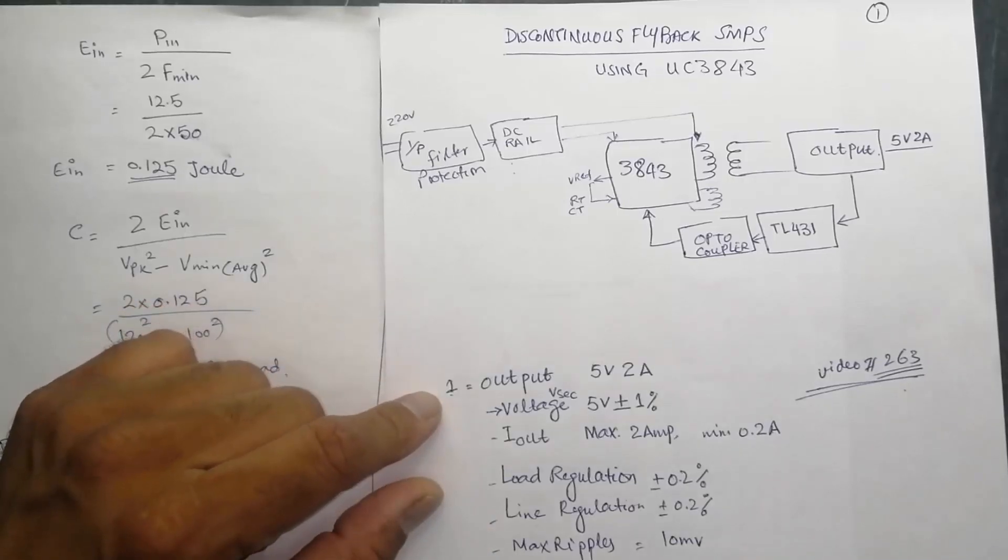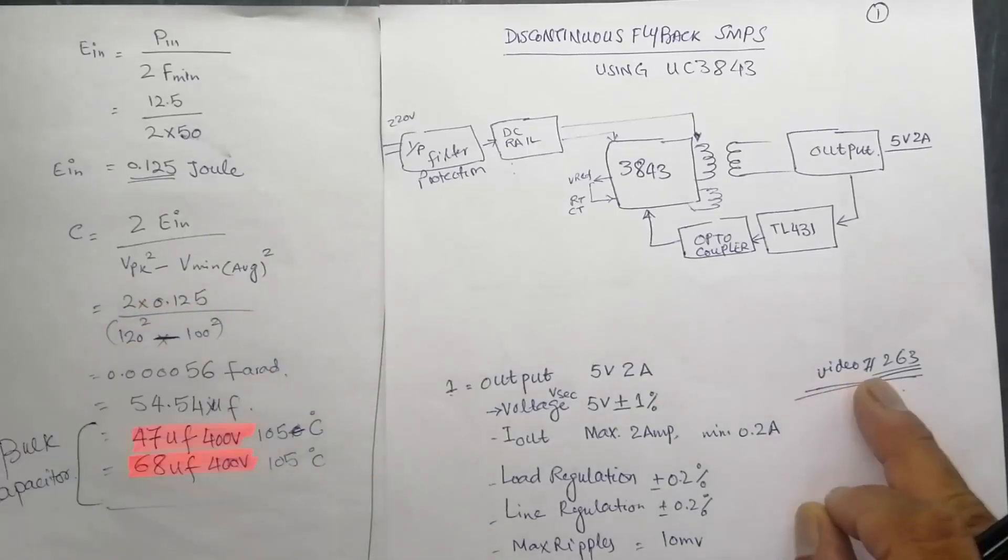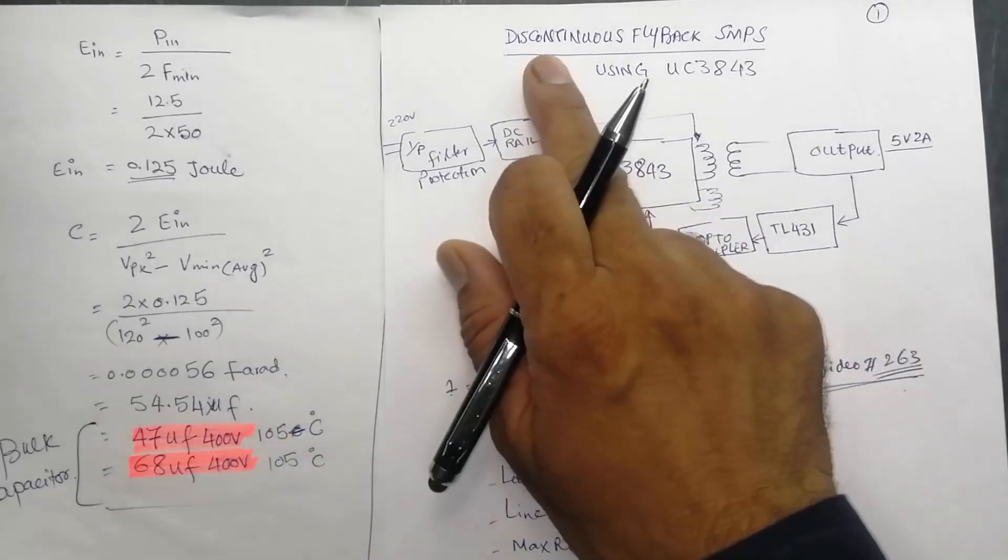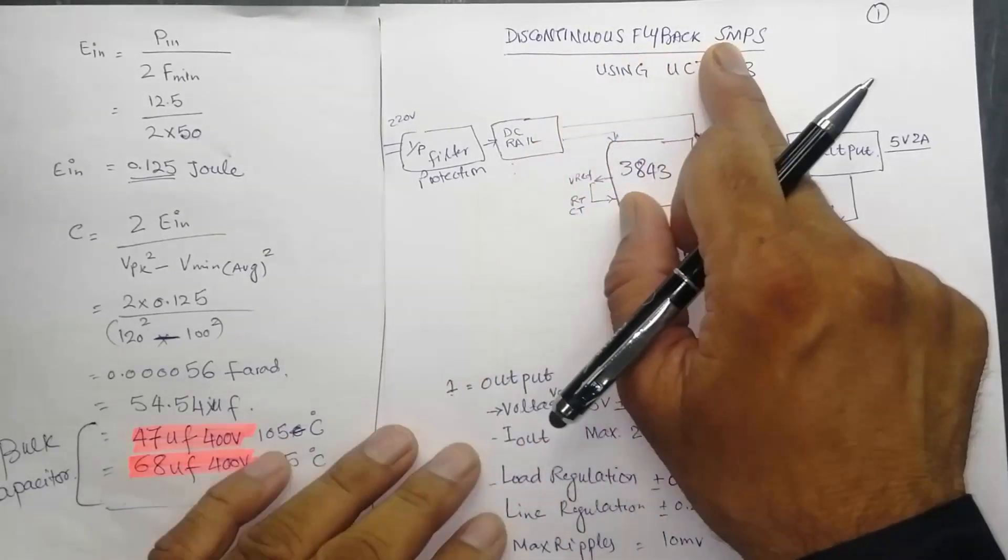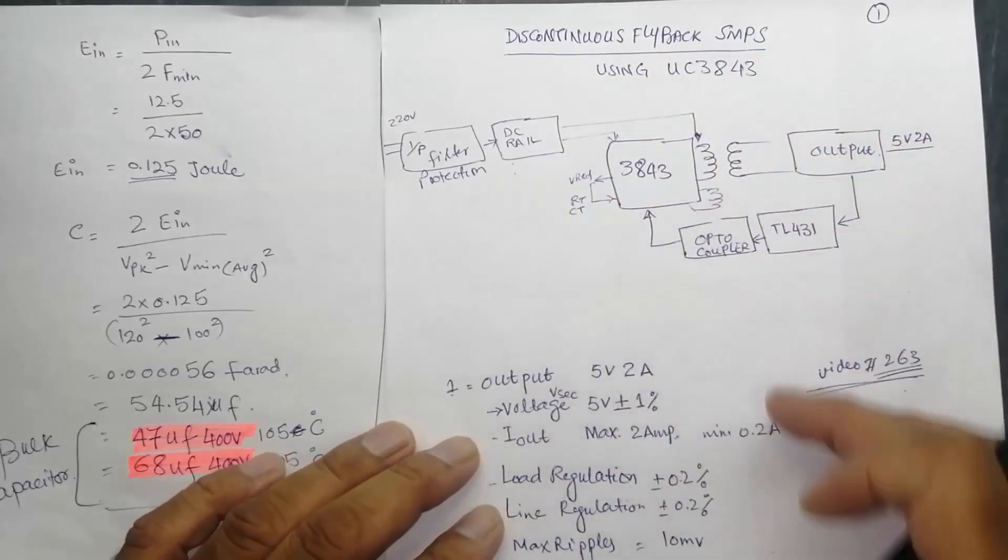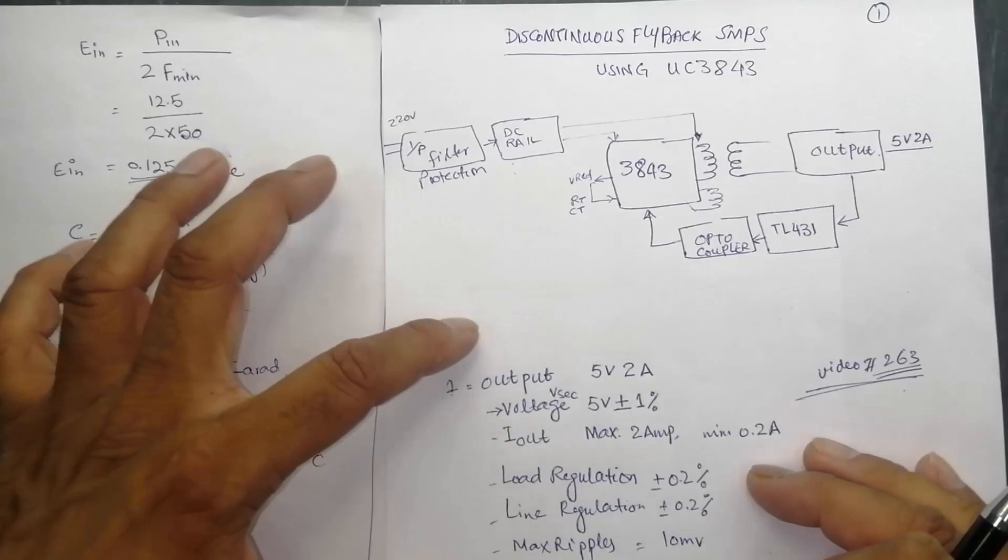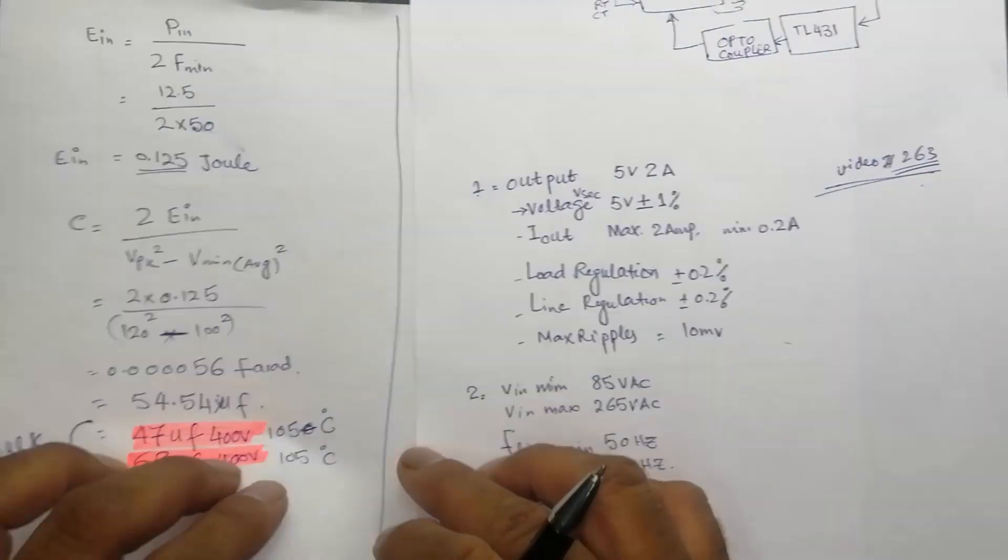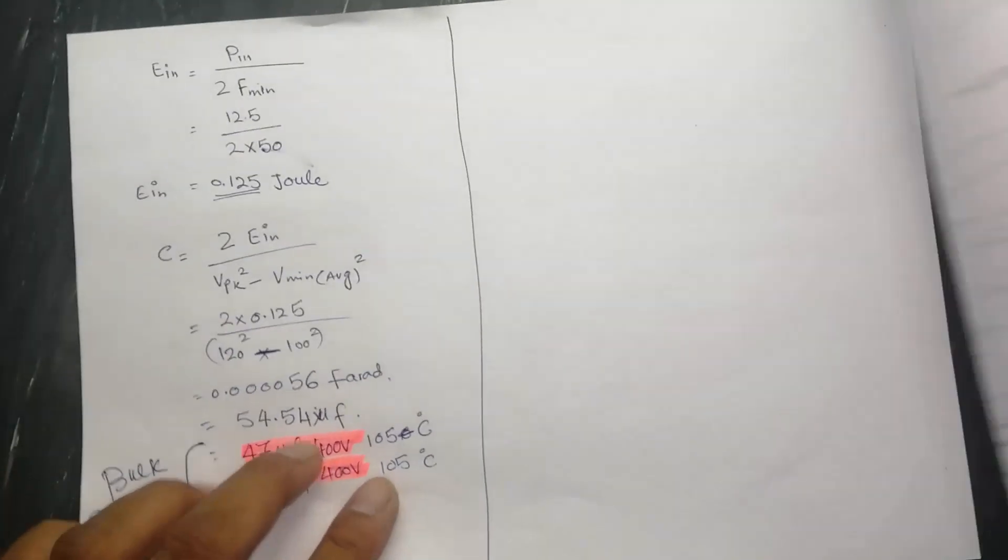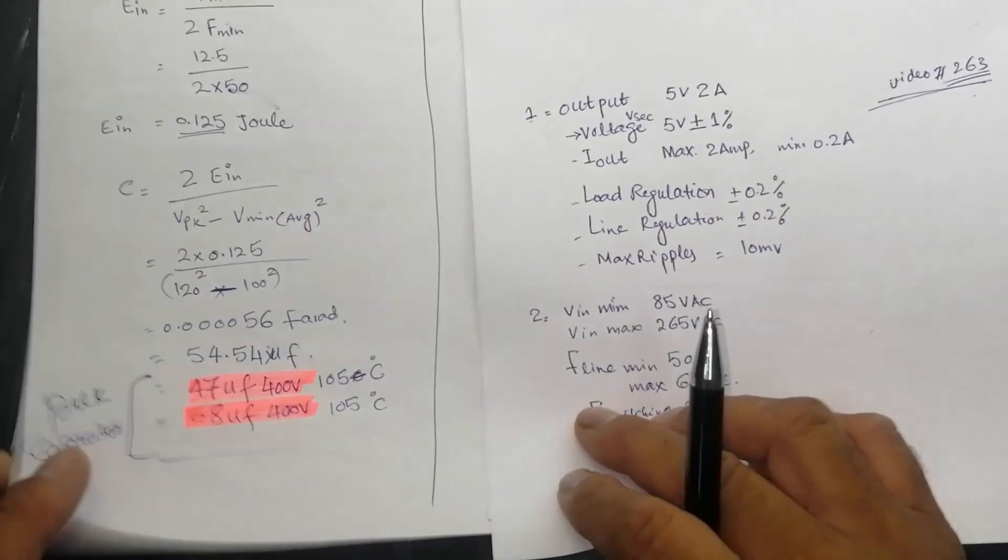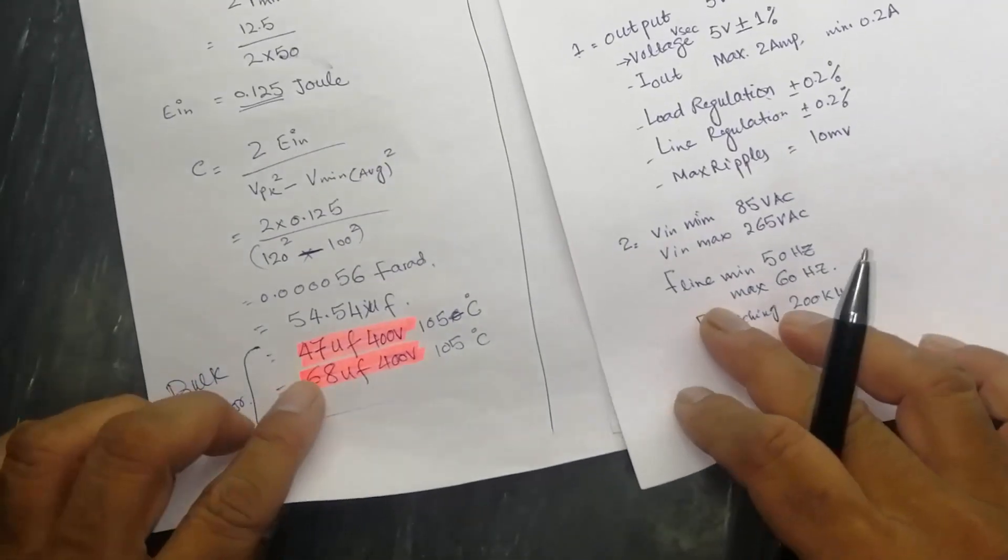Assalamualaikum warahmatullahi wabarakatuhu. Welcome to Hasim Electronics. Video number 263 on my channel for discontinuous flyback SMPS circuit design. In this video I discussed how we can select output input and then I discussed how we can calculate DC rail and how we can select a bulk capacitor.